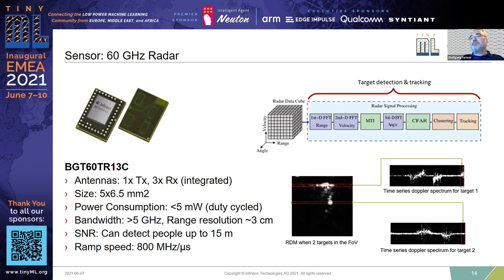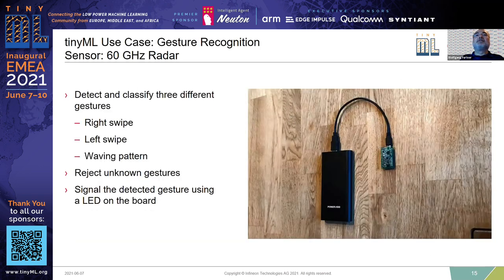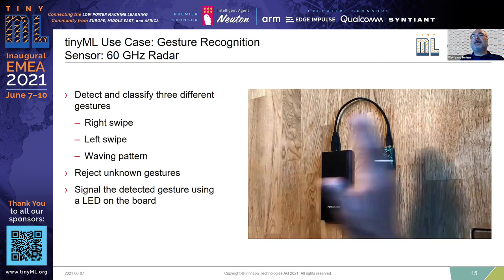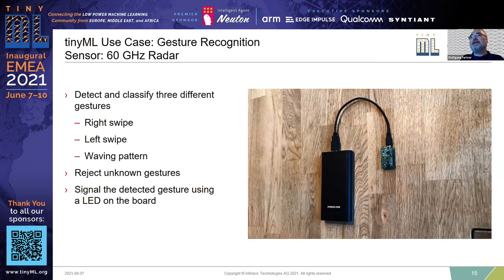The range-Doppler map depicts the strength of reflection at a certain distance and with a certain velocity — these are very characteristic patterns for objects. You can take these range-Doppler maps and add a sense of direction with multiple antennas, giving you more range-Doppler maps. With all this information, you can differentiate and classify objects based on size, velocity profile, and reflection properties. Radar can be used in cases where video is not applicable because of privacy concerns, for example.